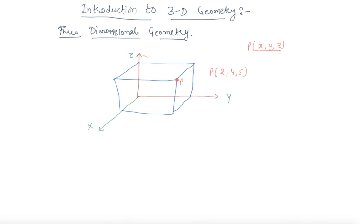The distance from the x-axis is 2, the distance from y is 4, and 5 is the vertical distance, meaning the height. In this way, we can find a point in three-dimensional space.